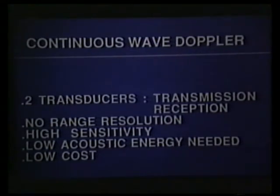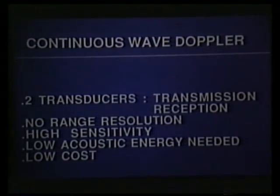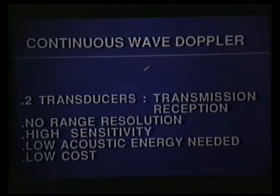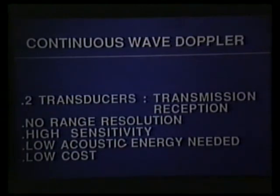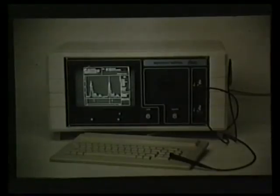In a continuous wave Doppler device, signals are received from every moving reflector in the path of the beam, so there is no range resolution. The advantages of this continuous wave Doppler system are its high sensitivity, the need for low acoustic energy, and its relatively low cost.